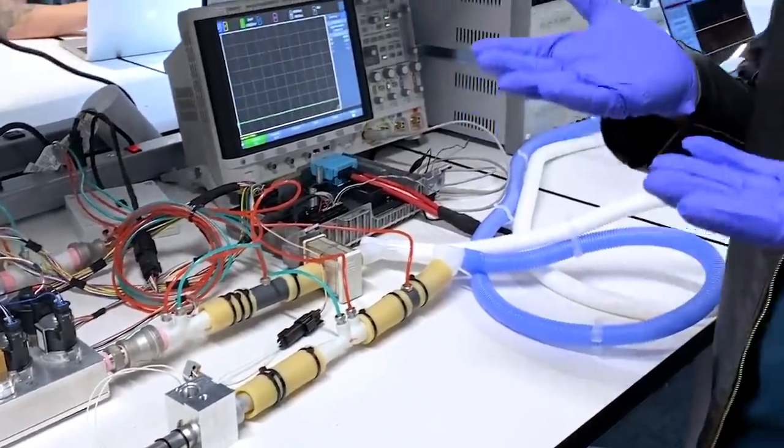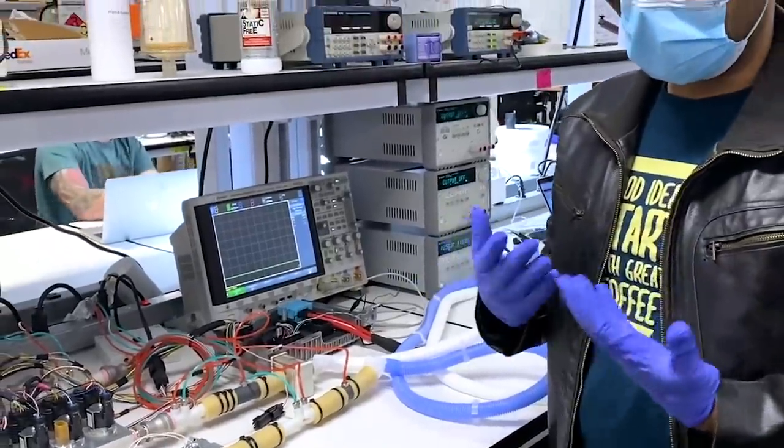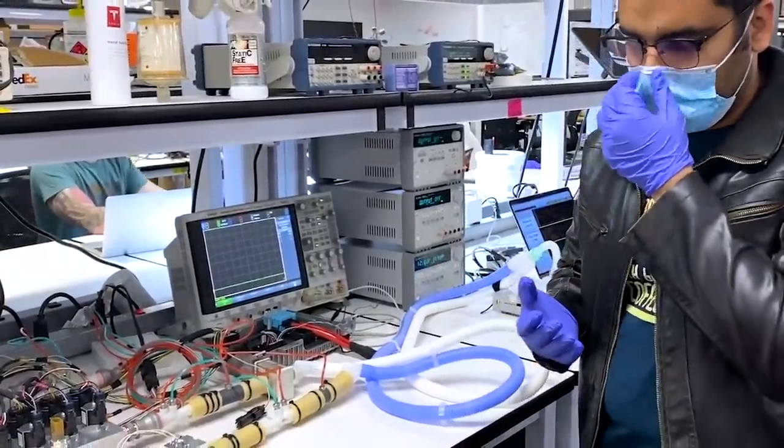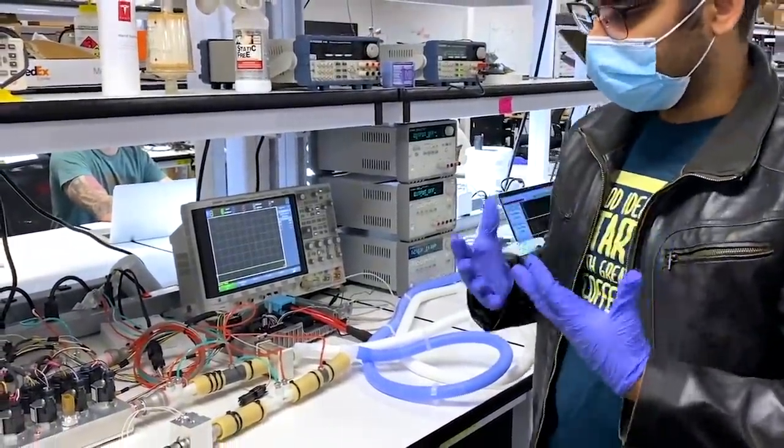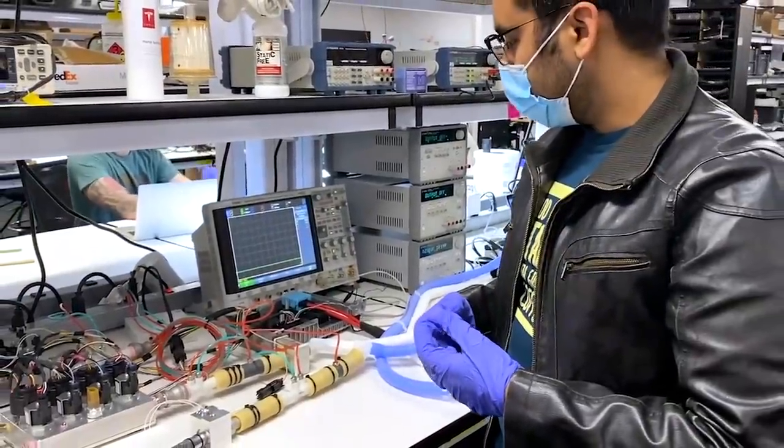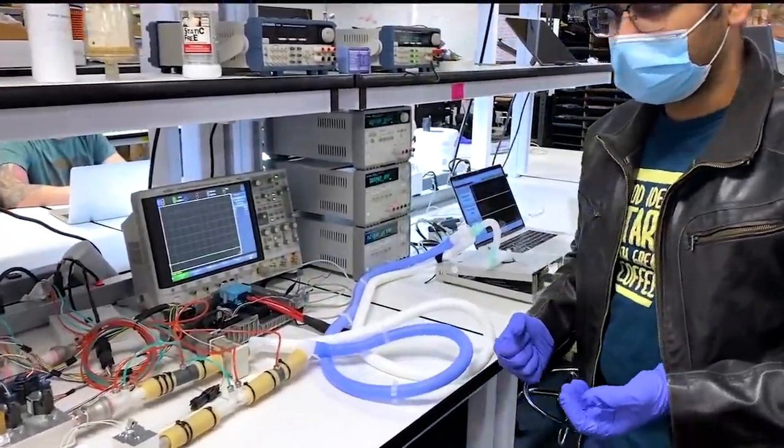So you always keep a positive pressure on the lungs, which helps the COVID-19 patients to breathe, keeps their lungs open. So yeah, that's the Tesla ventilator first prototype.